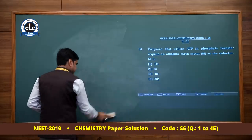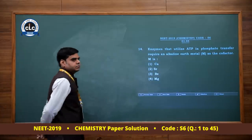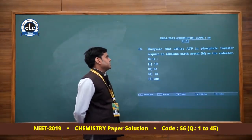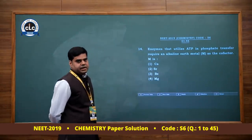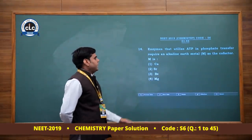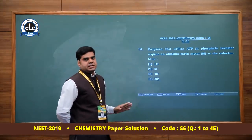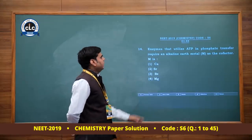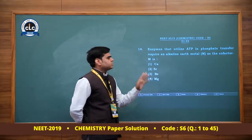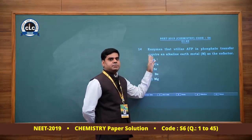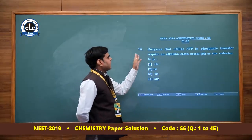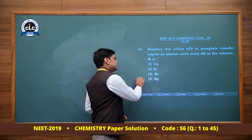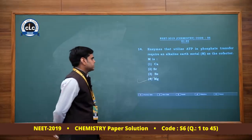Enzymes that utilize ATP in phosphate transfer require an alkaline earth metal as co-factor. This is an S-block question from NCRT's biological significance of magnesium and calcium section. Kinase enzymes use magnesium ion as co-factor/activator. Answer is option 4.